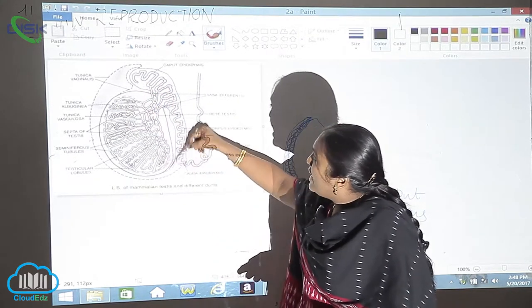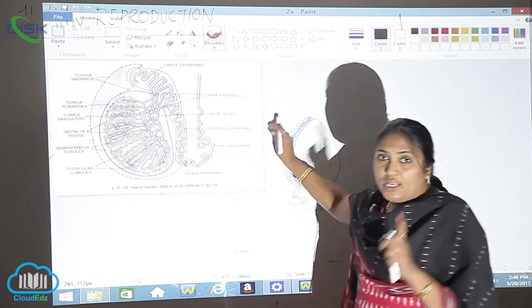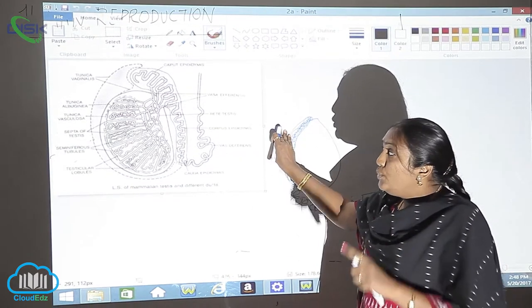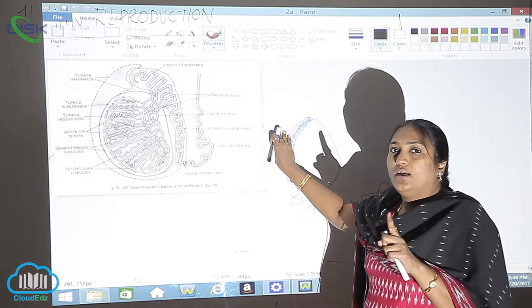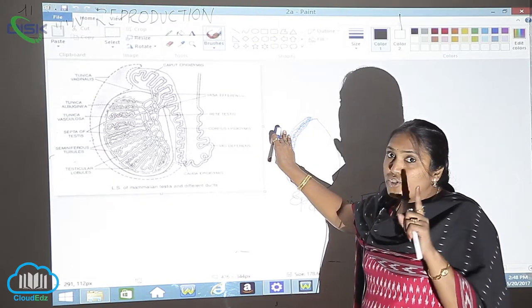And you can see here the outermost lining is called tunica vaginalis. Tunica vaginalis is the outermost region of the testes, the outermost region of the testes.